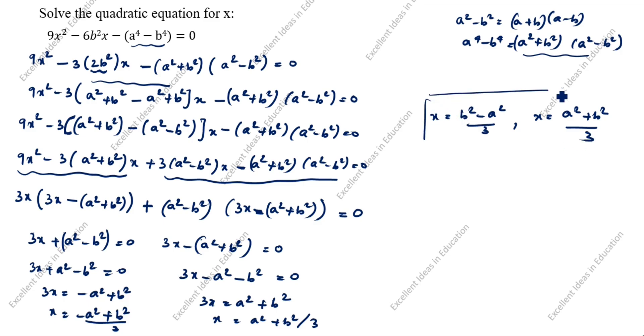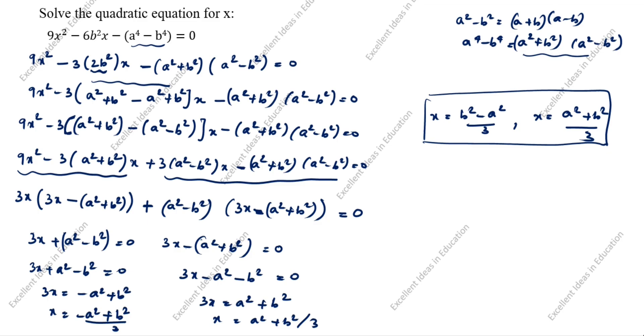These are the x values — this is the second method. The first method and second method give the same answer but use different concepts. Which method is easiest for you, you can follow. Thanks for watching this video.